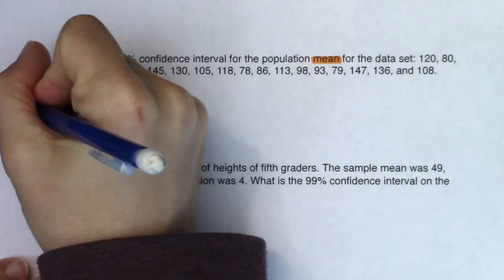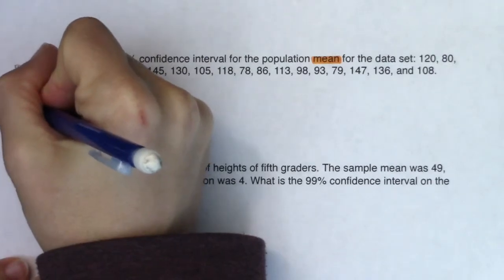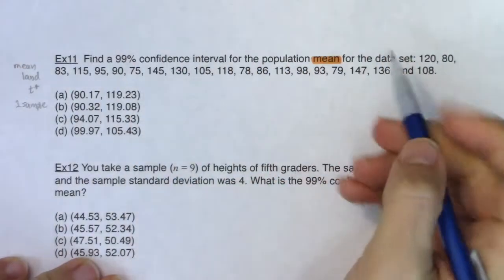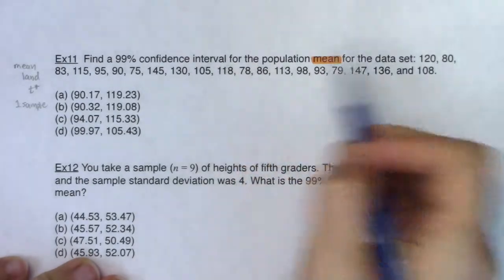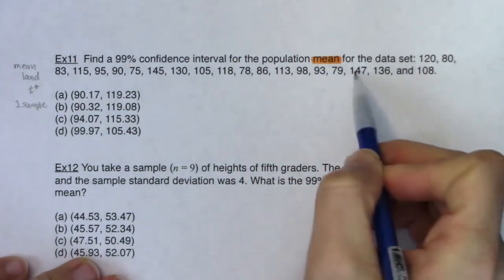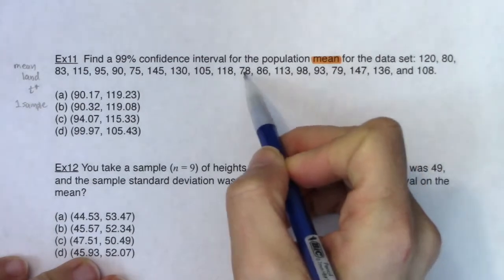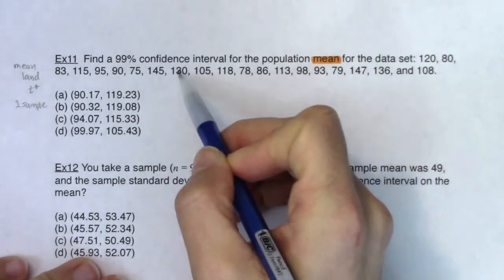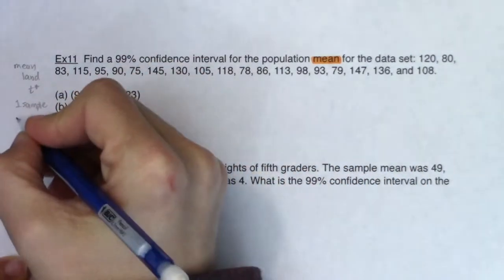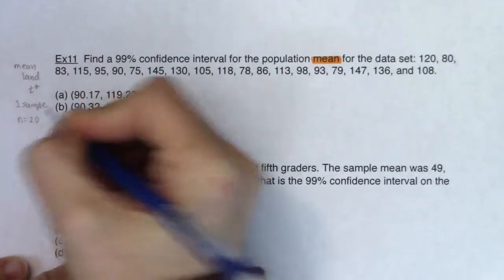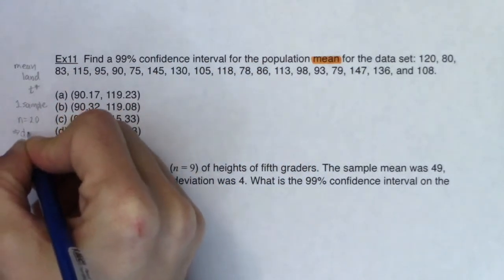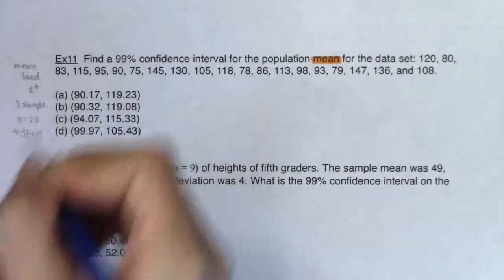It looks like they gave me one sample. Let's see how many folks are in the sample — they didn't give us any context. So counting: 1, 2, 3, 4, 5, 6, 7, 8, 9, 10, 11, 12, 13, 14, 15, 16, 17, 18, 19, 20. So it looks like I have 20 observations in my sample, which would tell me my degrees of freedom was 19.